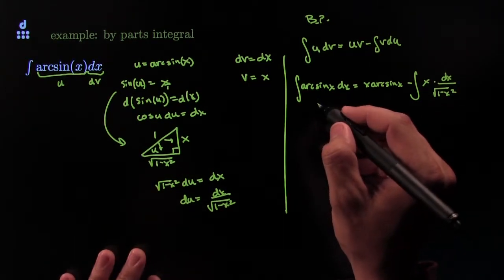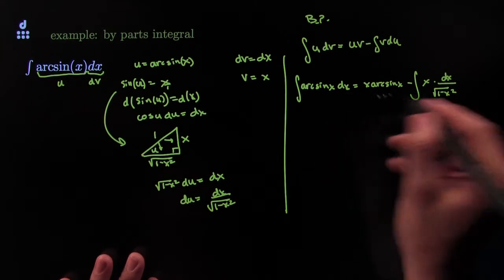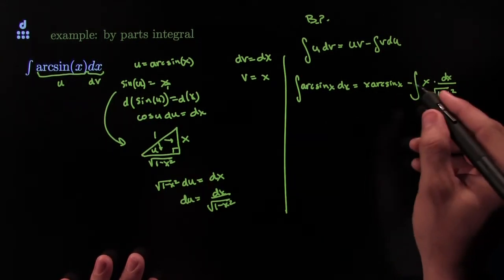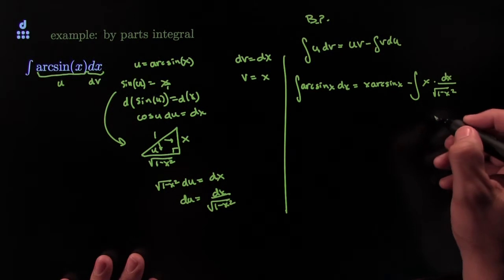So, the arcsine of x dx is equal to this guy right here. This is already done. This one's not that bad. Here, we'll do a little u sub.